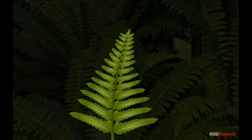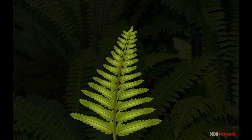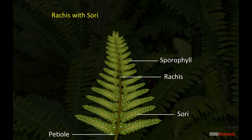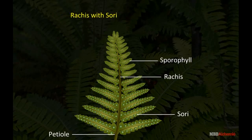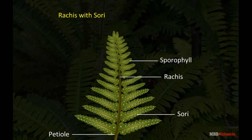Leaves are large, compound and look like a branch, hence named as frond. Each leaf has a short stalk called petiole. The pinnae develop on the main stalk called rachis, which is the continuation of the petiole.